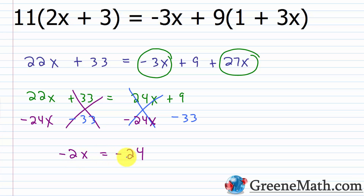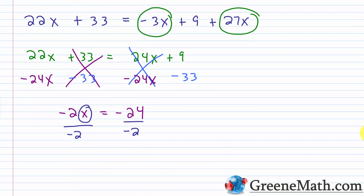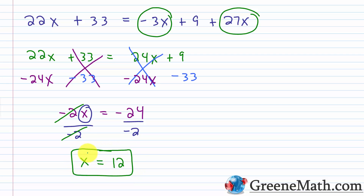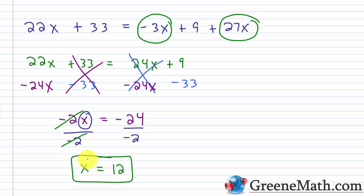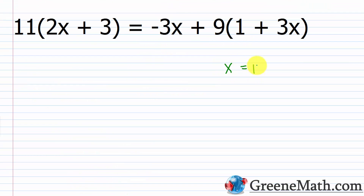Now I want to isolate x. Since negative 2 is multiplying x, I divide both sides of the equation by negative 2. Negative 2 over negative 2 is 1, so I'm left with just x. And negative 24 over negative 2 is positive 12. So our solution is x equals 12. Let's check — we said x is equal to 12.